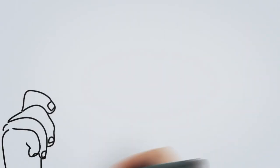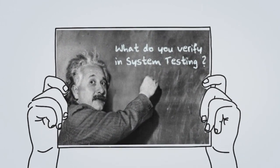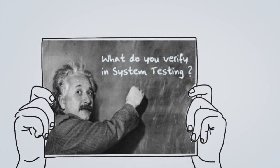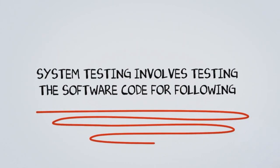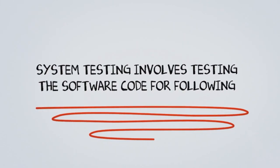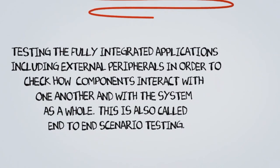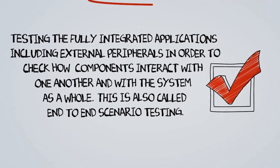What do you verify in system testing? System testing involves testing the software code for the following: testing the fully integrated applications, including external peripherals, in order to check how components interact with one another and with the system as a whole. This is also called end-to-end scenario testing.